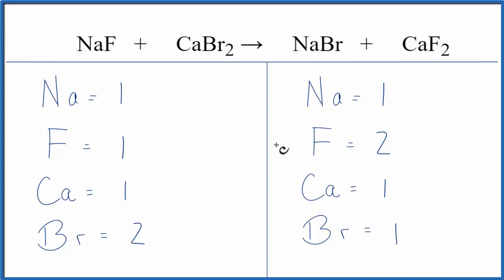Why don't we fix the fluorines first by putting a 2 in front of the NaF? So now we have 1 times 2 for the Na, that gives us 2 Nas, and the 2 applies to everything. So 1 times 2, that'll give us 2 fluorines.